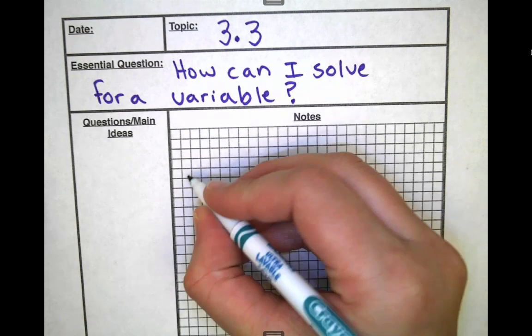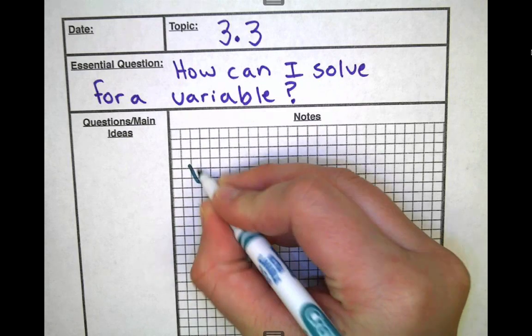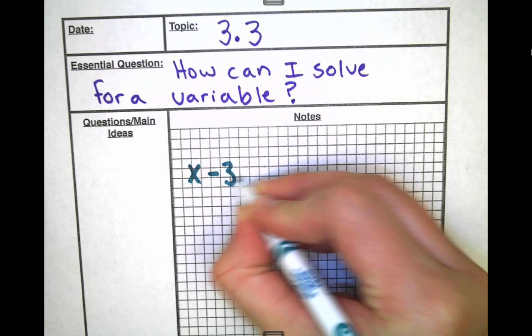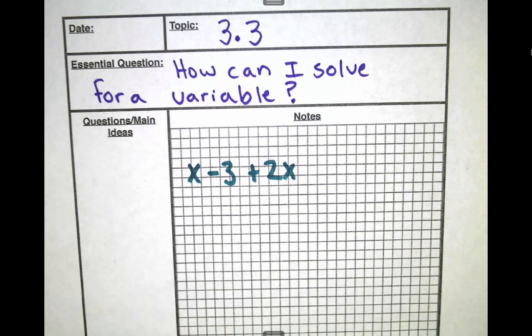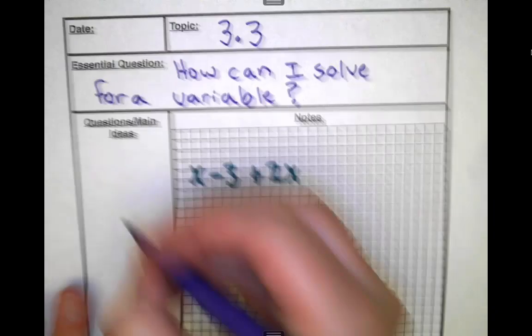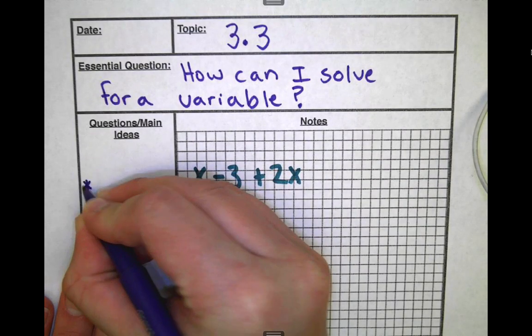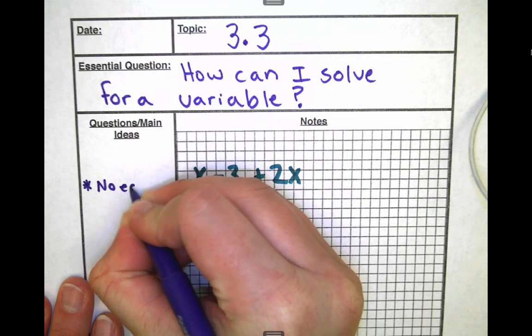If I told you that I had x - 3 + 2x, and this is all I knew, at this moment in time I cannot solve for x. If I said I want to solve for x and find the answer, what's x equal? That's completely impossible, and that's because if I want to know what x equals, I need an equal sign. So I'm going to put a little star and say there's no equal sign.